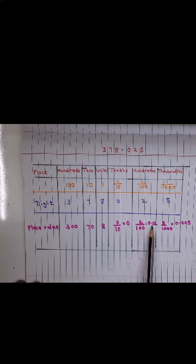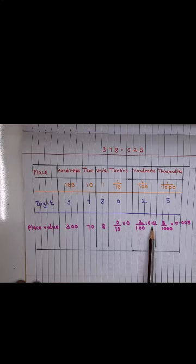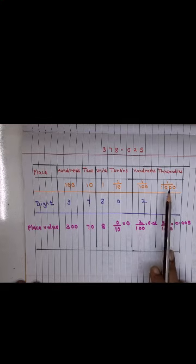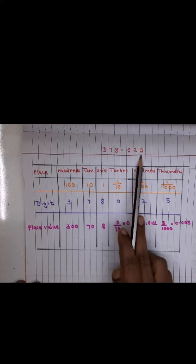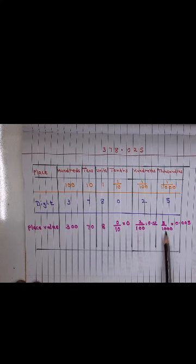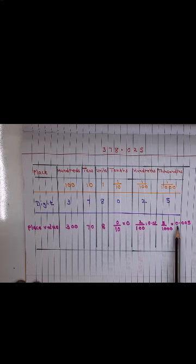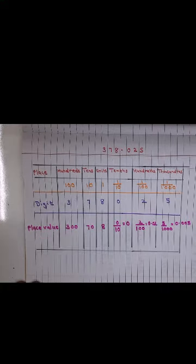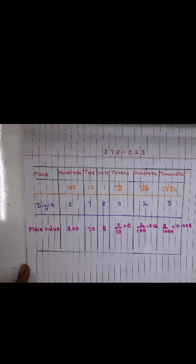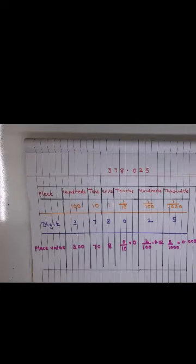Similarly for the thousandths children, I have 1 upon 1000, and what I have in the thousandths place is 5. So this will be 5 upon 1000. See the number of zeros, so this will be 0.005. I will be posting it so please have a look.